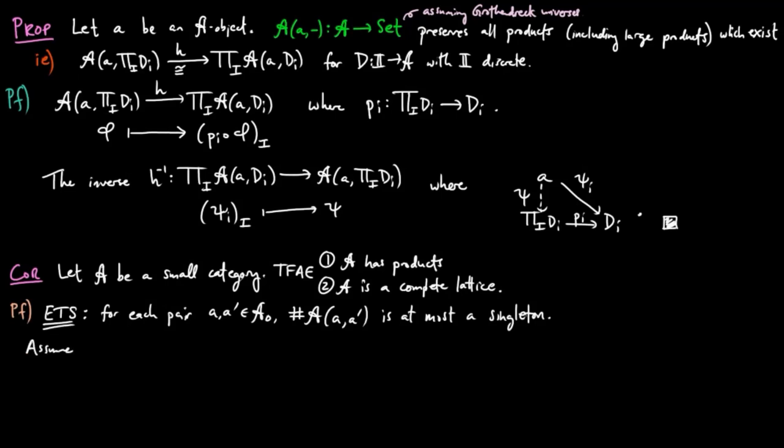Assume to the contrary that there exists A objects A and A prime such that the cardinality of morphisms from A to A prime is greater than or equal to two. Let the category I be equal to the morphism set from A to A prime. And we can do this since we're assuming A is a small category. And consider the constant functor D which takes each I in I to A prime.